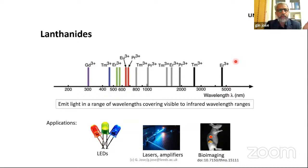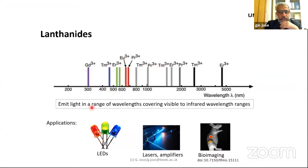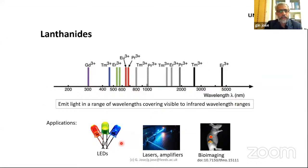The beauty of lanthanides is that you can choose different types of lanthanide ions — like holmium, erbium, europium — which are capable of emitting light at different wavelengths. This is why they are used in a range of light-emitting applications, for example LEDs, lasers, amplifiers, and bioimaging.